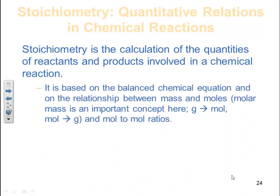Stoichiometry is the calculation of the quantities of reactants and products involved in a chemical reaction. It is based on the balanced chemical equation and on the relationship between mass and moles. In other words, molar mass is going to be an important concept here.